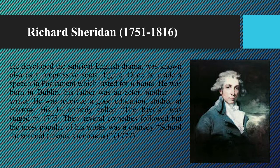Richard Sheridan developed satirical English drama and was also known as a progressive social figure — once he made a speech in Parliament that lasted six hours. He was born in Dublin; his father was an actor and his mother a writer. He received a good education and studied at Harrow. His first comedy, The Rivals, was staged in 1775, and several comedies followed. The most popular of his works was The School for Scandal in 1777.